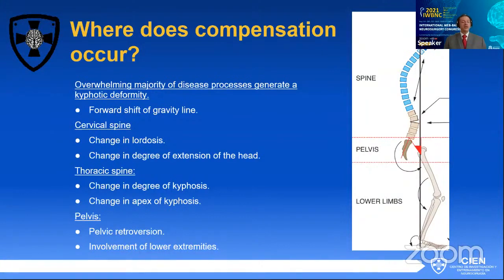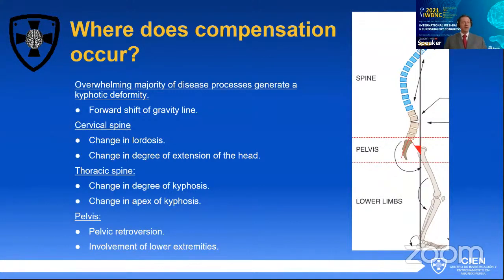In the thoracic spine, you're going to have changes in the degrees of kyphosis, but also, very importantly — something you have to take into account with the x-rays — you're going to have a change in the apex and the extension of the curve. That curve, which usually tends to be around T7, can shift upward, downward, and the limits of the thoracic kyphosis can shift depending on the situation. In the pelvis, there are also going to be changes, most specifically pelvic retroversion, and at some point involvement of the lower extremities.